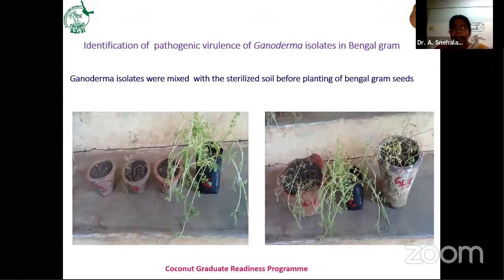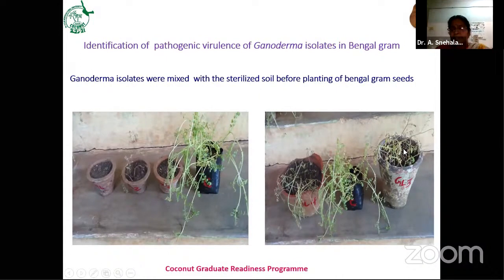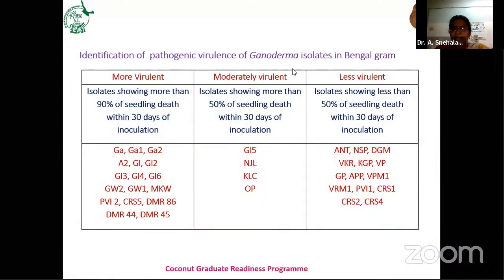Through these studies, we conducted grouping of pathogenic virulence of 32 Ganoderma isolates. In inoculated plants, all were dead; the control plants without culture were unaffected. Based on this, we classified Ganoderma isolates into highly virulent, moderately virulent, and less virulent. Isolates showing more than 90% seedling death within 30 days are classified as highly virulent, and most isolates from Andhra Pradesh and Karnataka are highly virulent. Isolates showing more than 50% seedling death within 30 days are classified as moderately virulent.